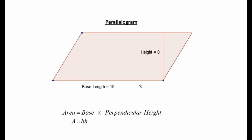So for a parallelogram, to work out the area we multiply the base by the perpendicular height, and we end up with the formula A equals B times H.